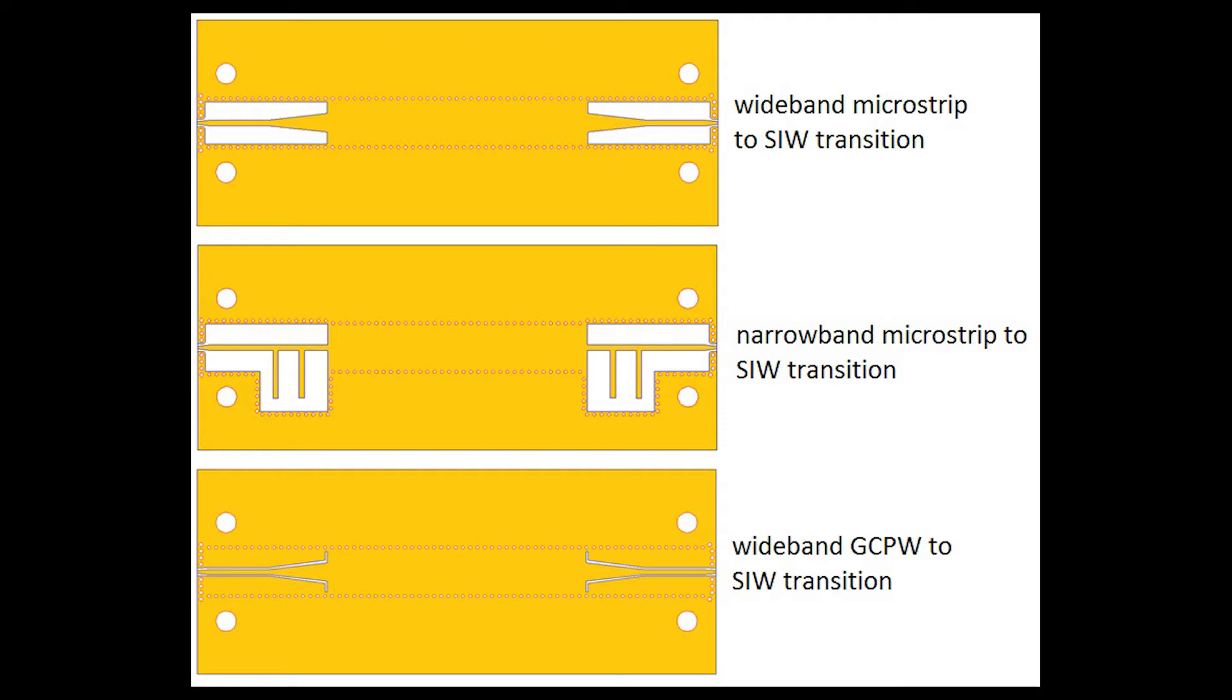So in general, this microstrip to SIW transition is actually pretty good for wideband applications. However, my experience is the 3 dB cutoff, which is basically the cutoff from not a waveguide mode to a waveguide mode, typically there's a little bit of noise involved with this transition.